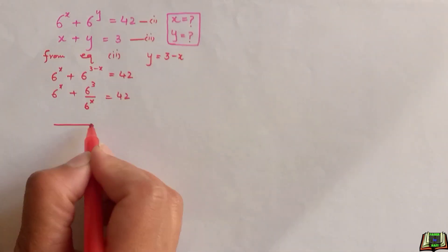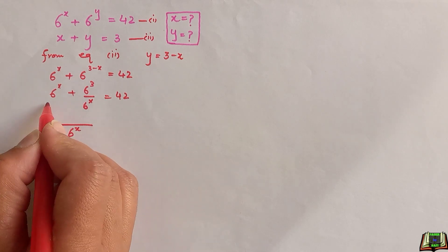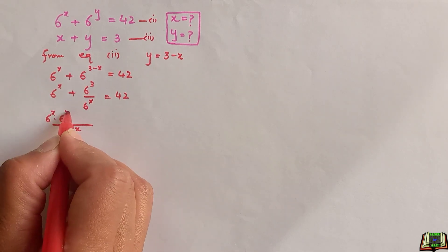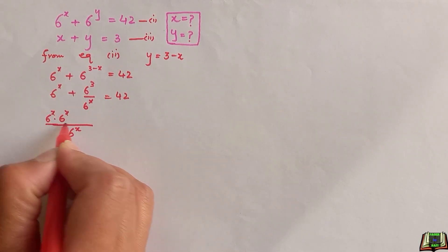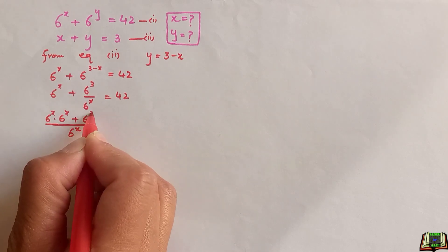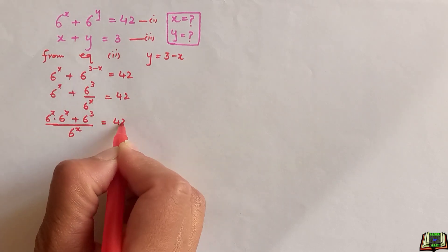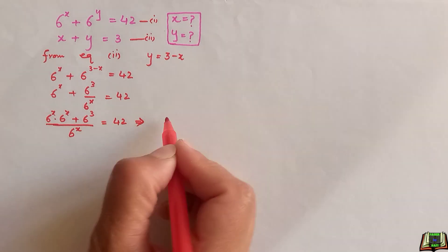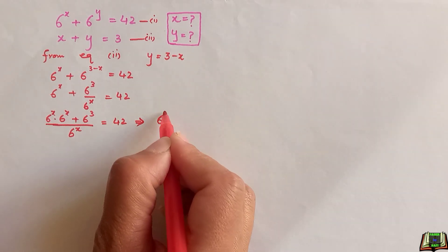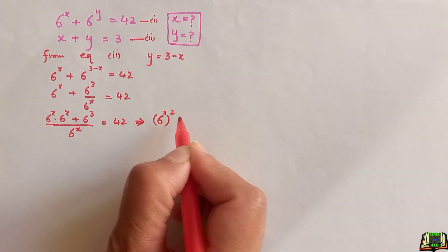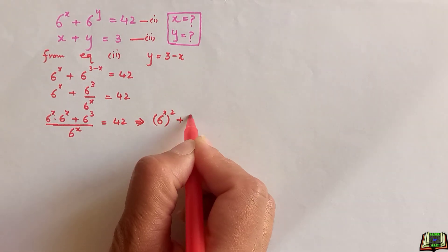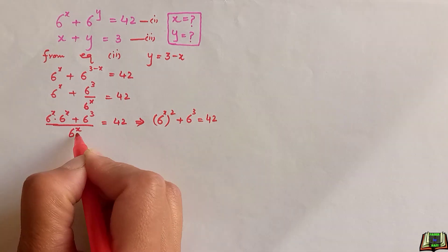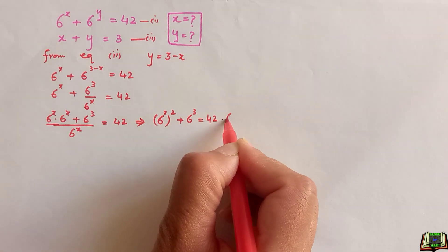Taking 6 to the power x as the LCM, we get: 6 to the power x times 6 to the power x plus 6 to the power 3, all divided by 6 to the power x, is equal to 42. This simplifies to: (6 to the power x) squared plus 6 to the power 3 equals 42 times 6 to the power x.